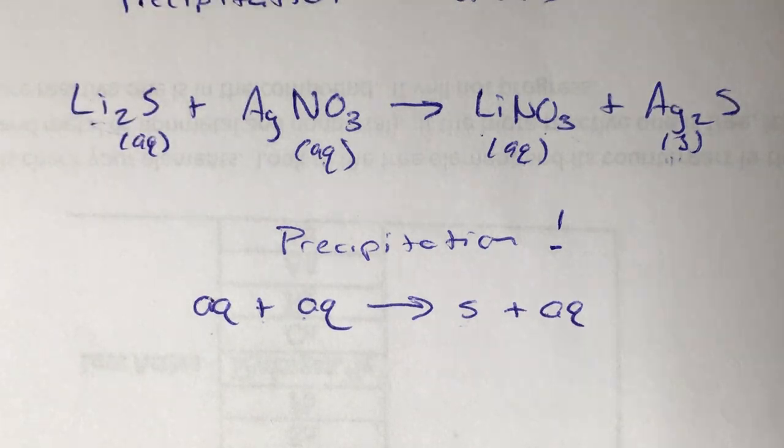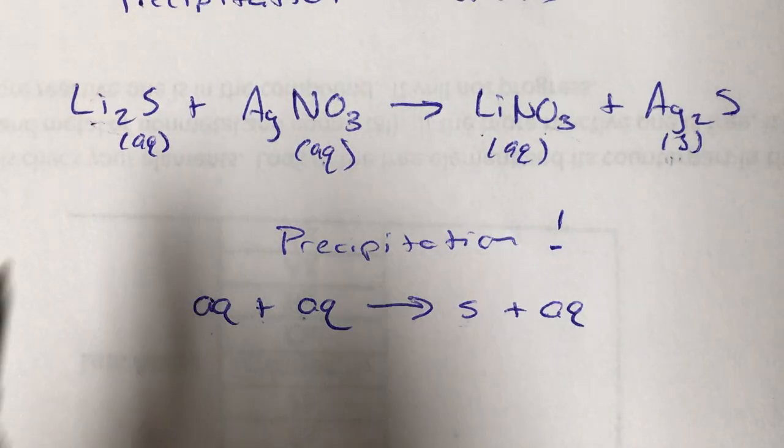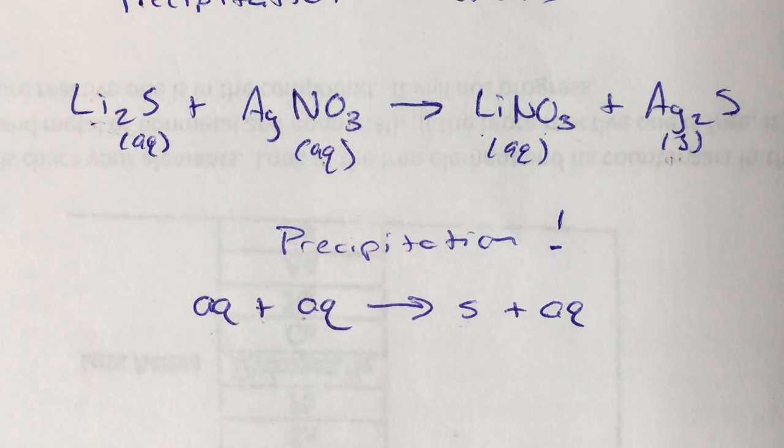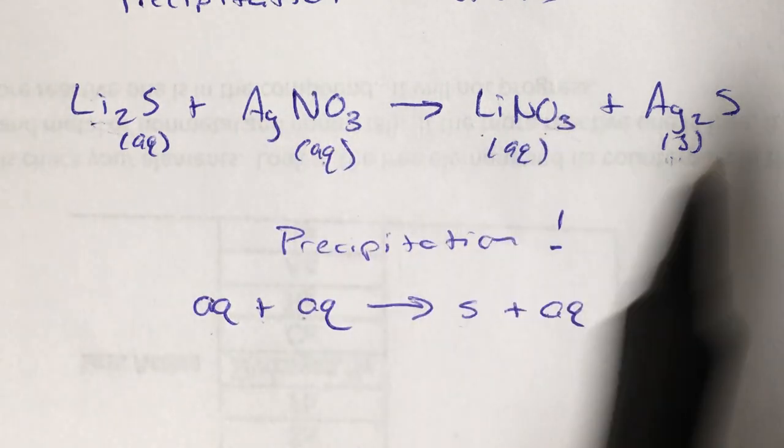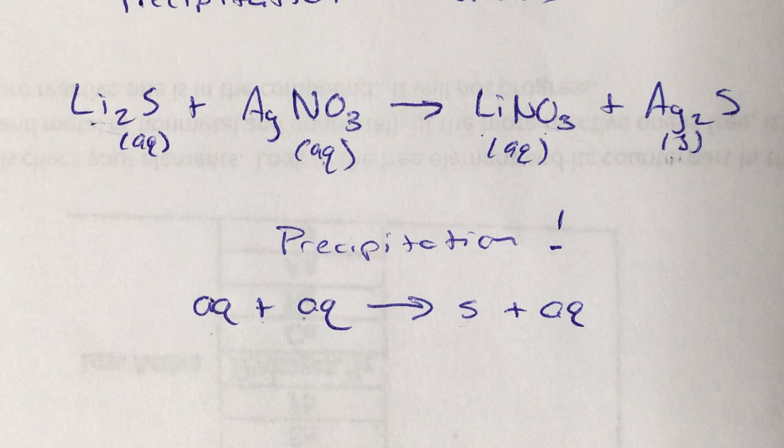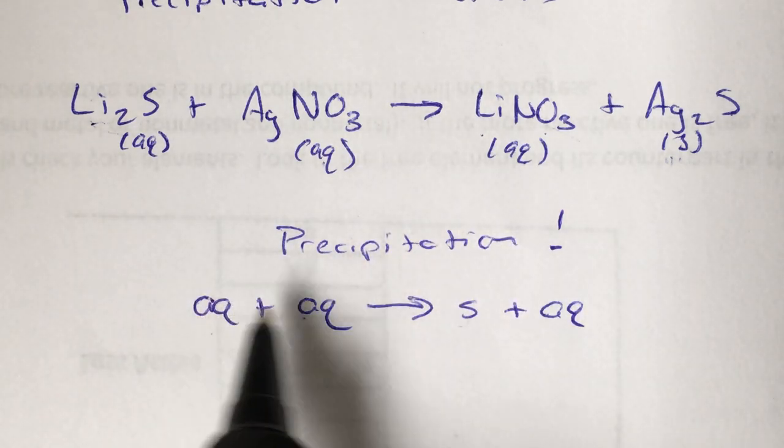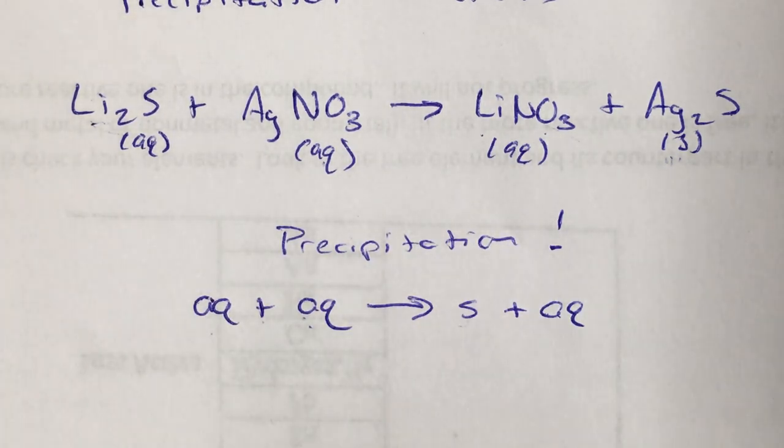Again, if you had come up with any other pattern, like an aqueous plus a solid producing two aqueous, that's not a precipitation reaction. If it had been two solids making two aqueous, that's not a precipitation reaction. Two aqueous making a solid. That's what you need.